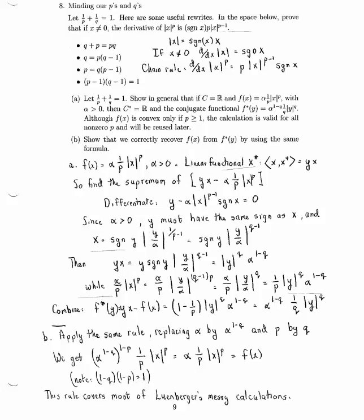And that lets us figure out not only the magnitude of x, which is clearly y over alpha to the 1 over p minus 1 power, but to get the sign correct by multiplying by sgn of y.